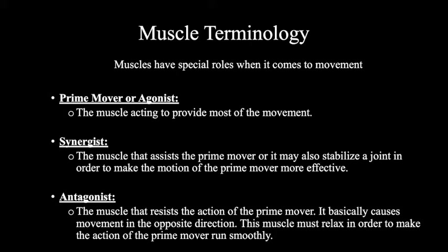A prime mover is the muscle acting to provide most of the movement. A synergist is the muscle that assists the prime mover during the movement, and may also stabilize a joint in order to make the motion of the prime mover much more effective. An antagonist is the muscle that resists the action of the prime mover — it causes movement in the opposite direction, and must relax in order to allow the prime mover to run smoothly.